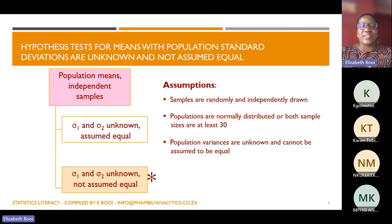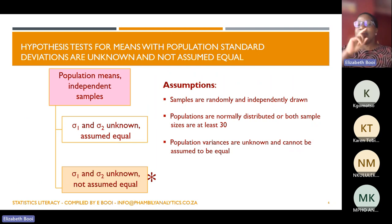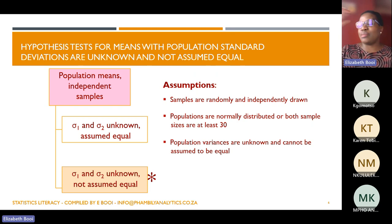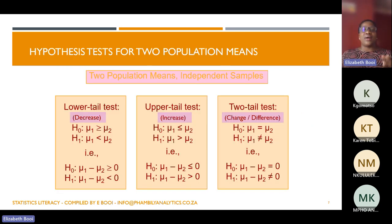For hypothesis testing for the mean where the population standard deviation is unknown and not assumed to be equal, the assumptions are the same: samples must be drawn independently, the population must be normally distributed or the sample size bigger than 30, and the population variance is unknown and cannot be assumed to be equal. That is one of the tests you can do.